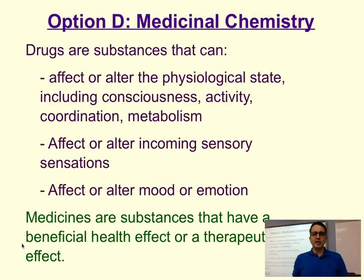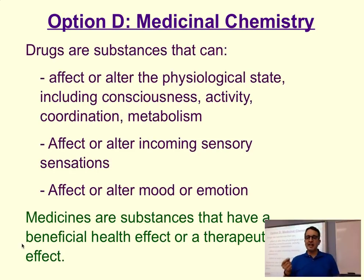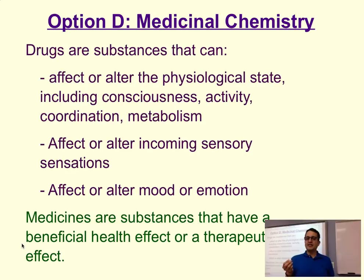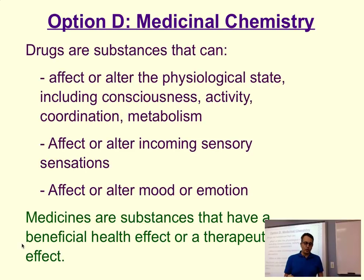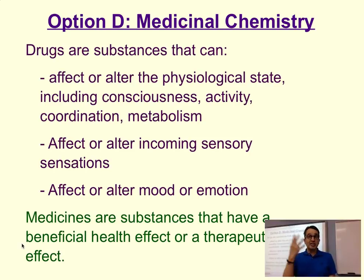The first thing that I want to define is: what is a drug? A drug is any substance that is capable of having an effect or altering either a physiological state, a sensory perception, or it has a psychological effect — it can affect your mood or your emotions. So drugs can alter your consciousness, your metabolism, how you see the world, how you hear, or even how you feel.